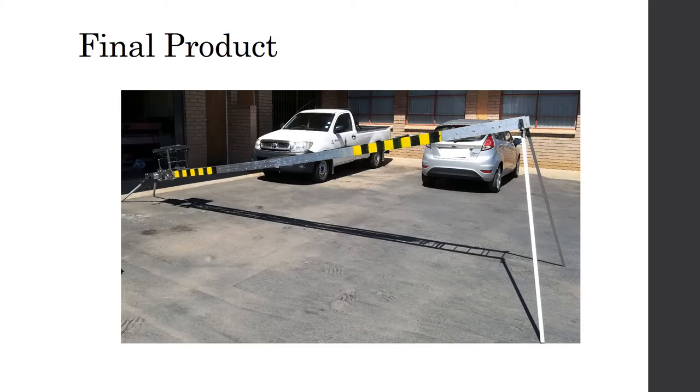Also notice the black and yellow stripes painted on the side of the catapult. These stripes are each 100 millimeters in length. These serve as a reference when using the high-speed camera footage during the tests.